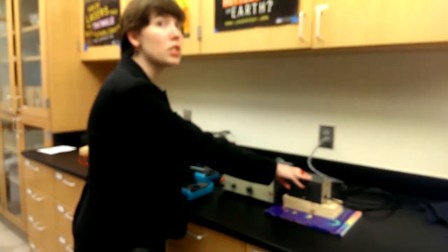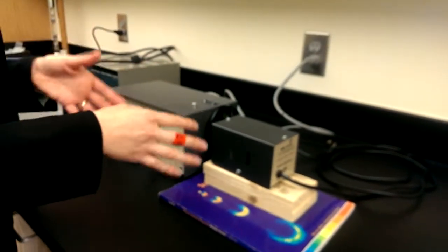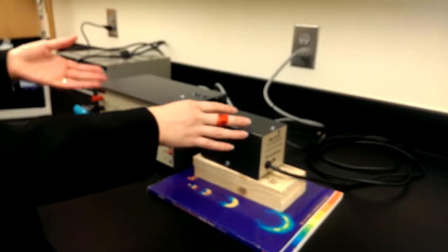This is a mercury light source which does output UV, so it's important that if it's uncovered, you have it off. It doesn't have an on-off switch; you need to physically unplug it. Right now it's unplugged, so we know it's off.